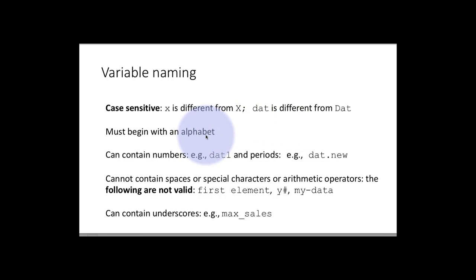Some rules about variable names. First of all, all variable names must begin with an alphabet. So for example, 5x would not be a valid variable name. They must begin with an alphabet. It can be lowercase, can be uppercase, doesn't matter, but have to begin with an alphabet.